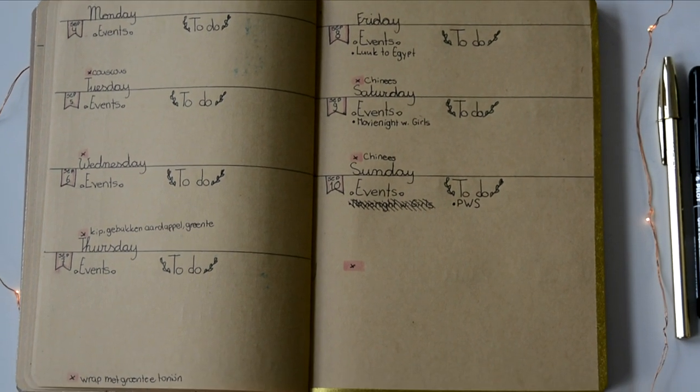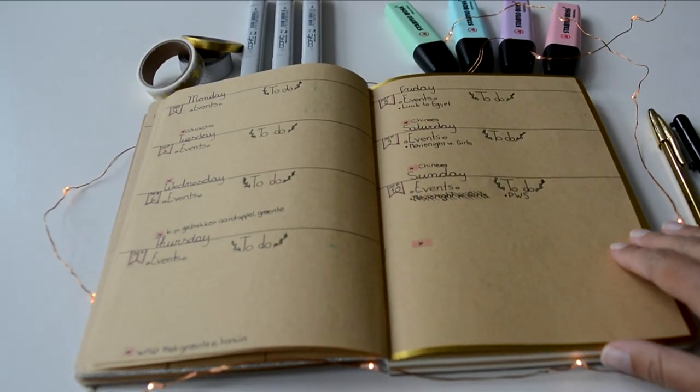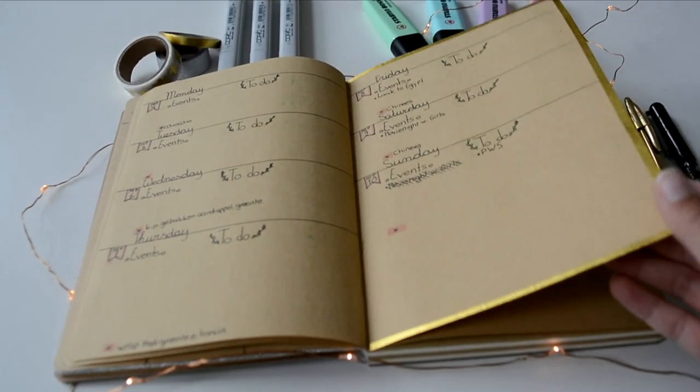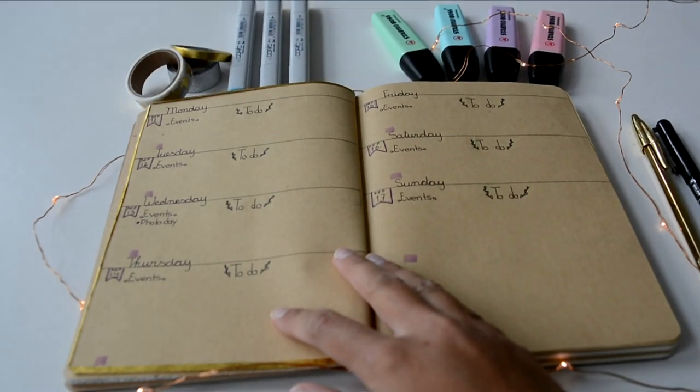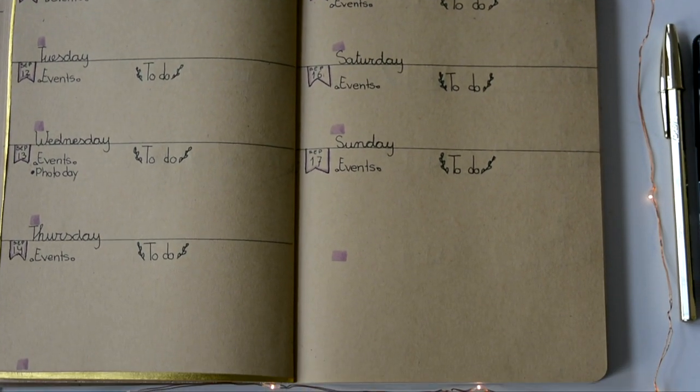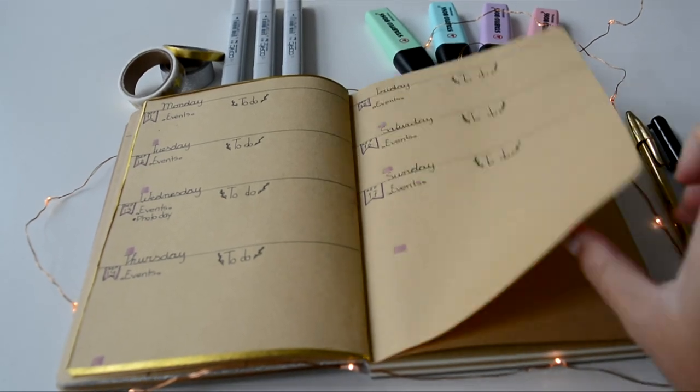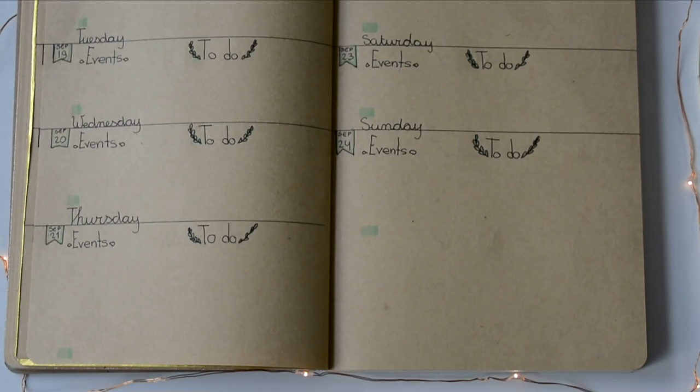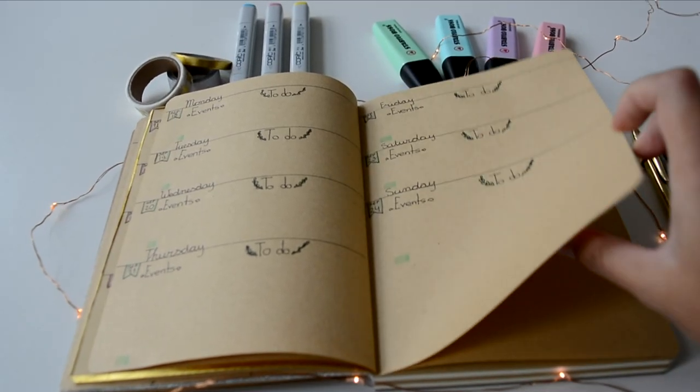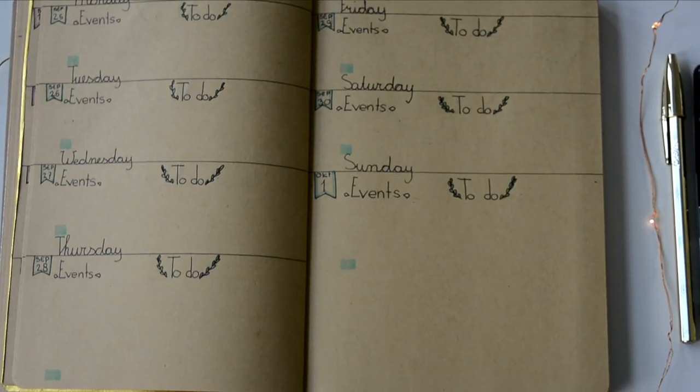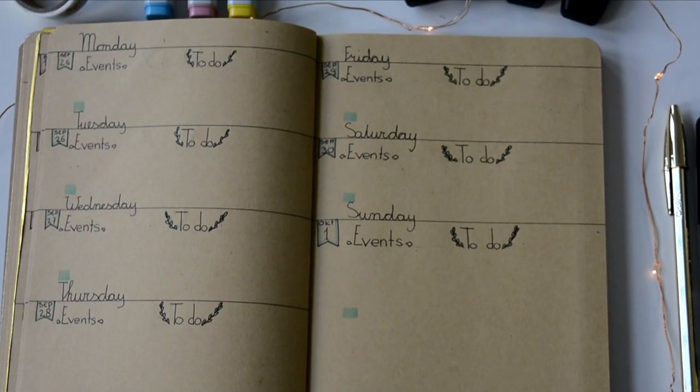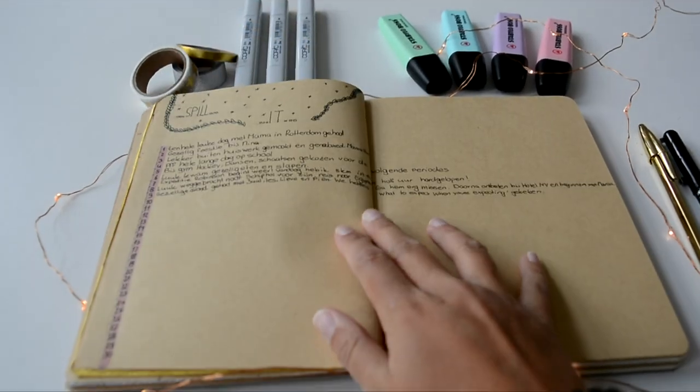On my tracker page I track the amount of water I drink and the amount of sleep I get and some other bits. This is my weekly overview and at the side of the page I added some gold washi tape so I can easily find it. The boxes at the bottom of the page are to track what I had for dinner that day.